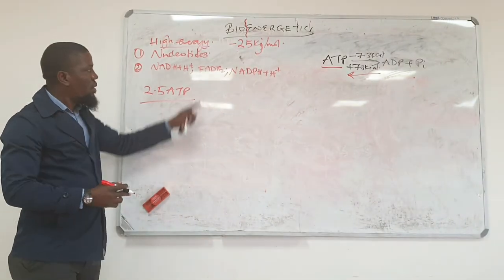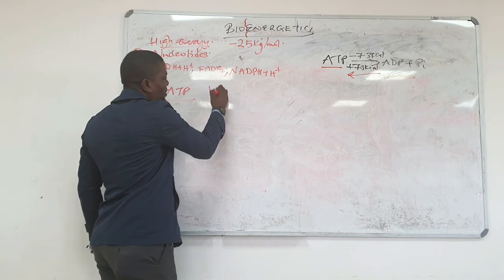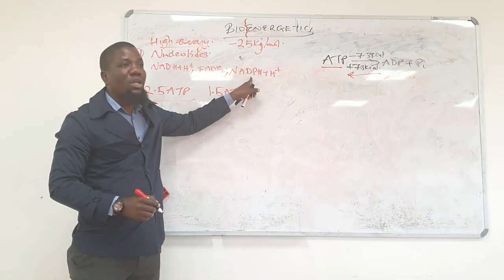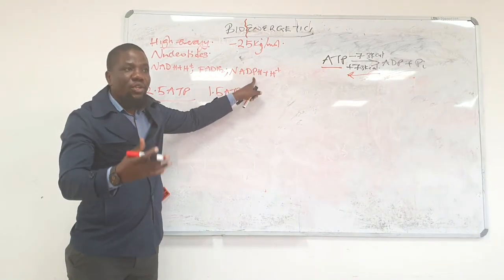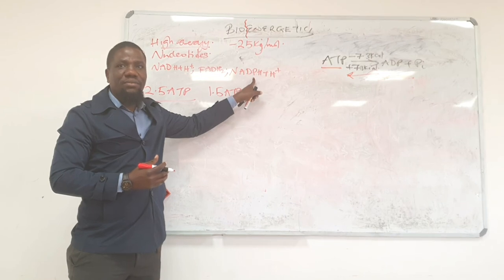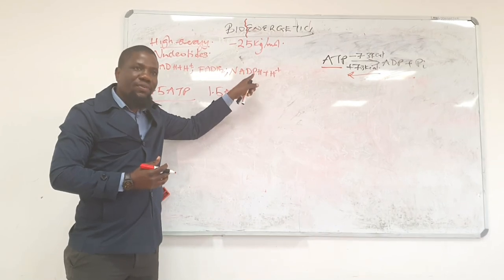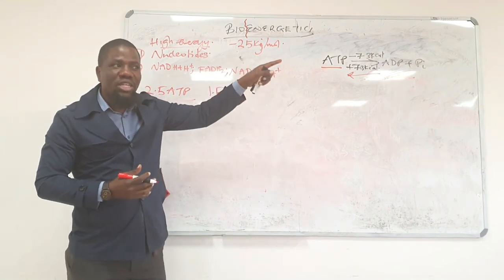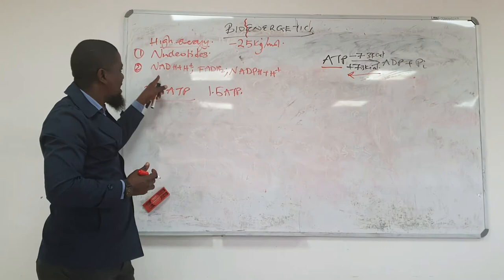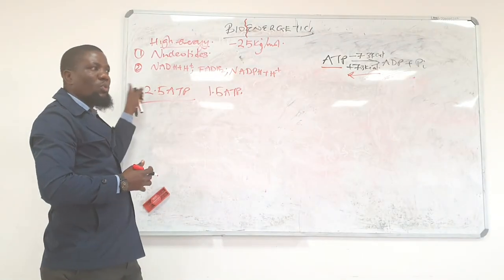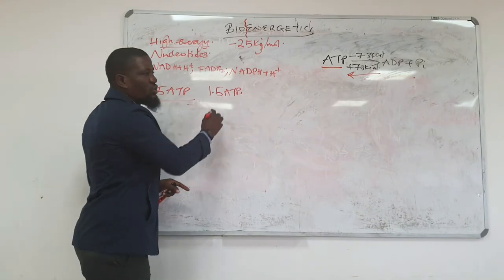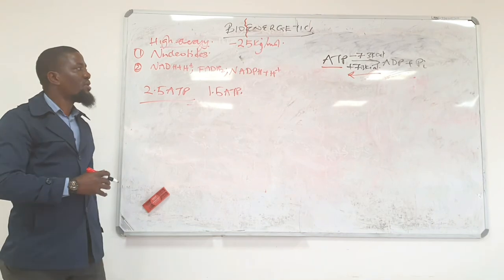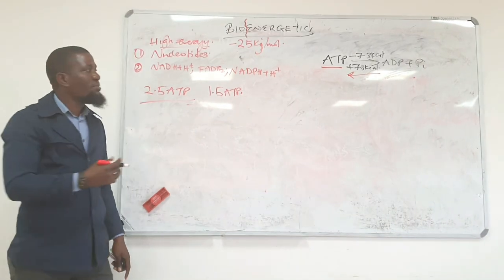In the electron transport chain, while FAD would give you about 1.5 ATPs, NADPH would be used to synthesize reduced equivalents such as fatty acids. And those fatty acids when you are starved will be broken down in a process of oxidation, particularly beta oxidation, and produce NADH and FADH2 which will enter into the electron transport chain and lead to the production of ATP.